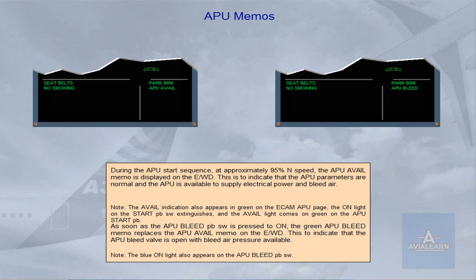As soon as the APU bleed push-button switch is pressed to on, the green APU bleed memo replaces the APU avail memo on the engine warning display. This indicates that the APU bleed valve is open with bleed air pressure available. The blue on light also appears on the APU bleed push-button switch.